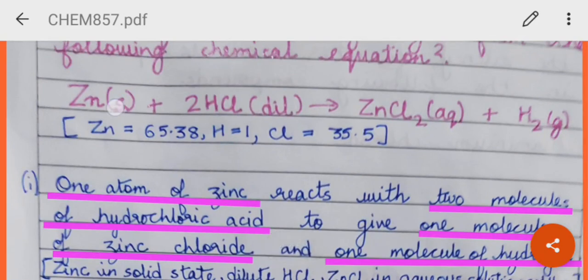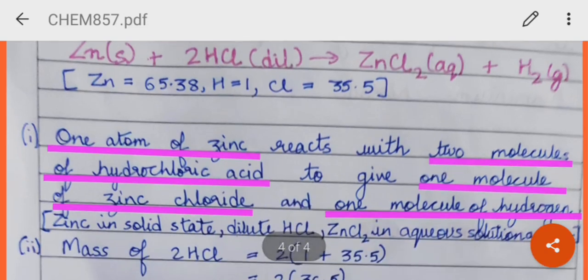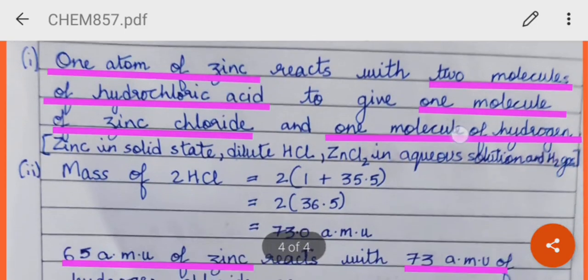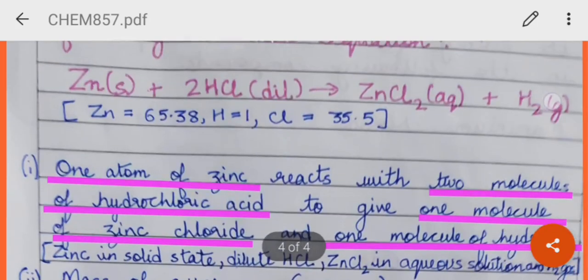One atom of zinc reacts with two molecule of dilute hydrochloric acid to give one molecule of zinc chloride and one molecule of hydrogen gas. Or you can also add here zinc is in solid state, and hydrochloric acid is diluted. Zinc chloride is formed in water or aqueous solution and hydrogen is gas.